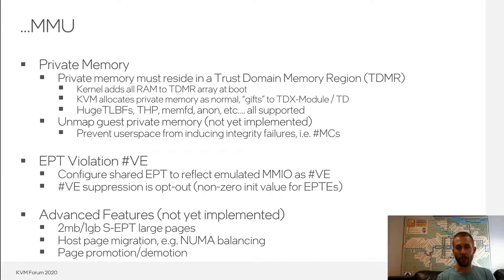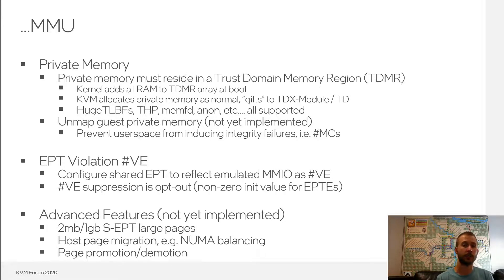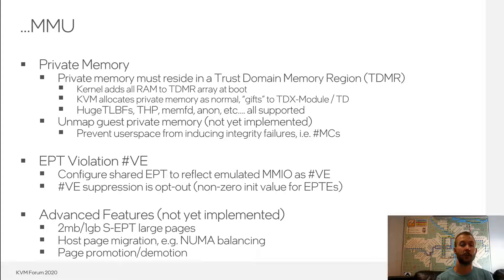As for unmapping guest private memory, because integrity failures result in machine checks, leaving the guest private memory mapped in host user space would allow host user space to essentially induce machine checks at will. While it's theoretically possible to harden the Linux kernel to gracefully handle all these machine checks, there is definitely a certain amount of risk associated with that approach. So we're exploring unmapping guest private memory so that accesses from host user space to guest private memory would result in a page fault as opposed to a machine check.